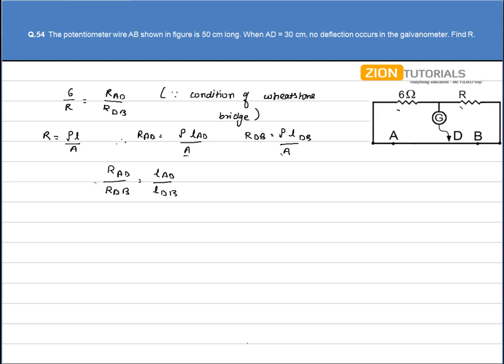On substituting this value in equation number 1, I have 6 by R is equal to LAD by LDB. So 6 by R equals LAD which is 30 cm, and LDB will be 50 minus 30. So the value of R comes out to be 6 into 20 by 30. That is the answer.